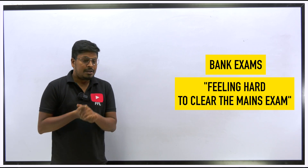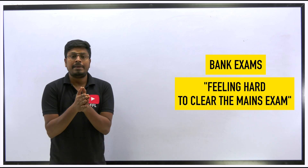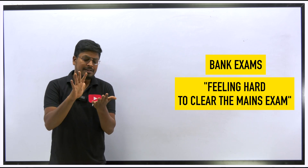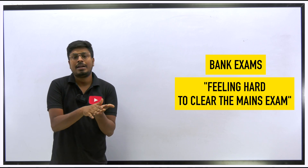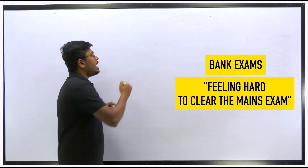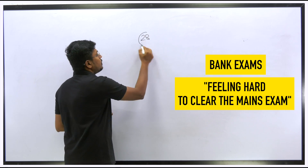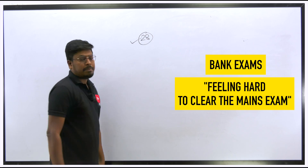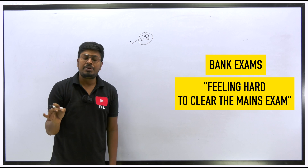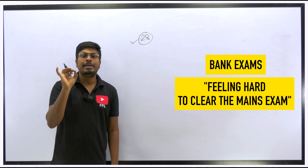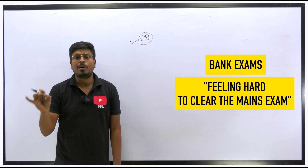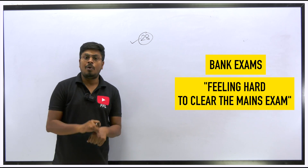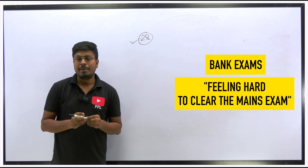Remember one thing: according to me there are 28 topics in quantitative aptitude for bank exams. Topics like trigonometry and algebra are not required for bank exams. Try to learn all 28 topics, and you need to know basic to medium level questions for all of them — how to solve easy to medium level questions and all the important formulas.